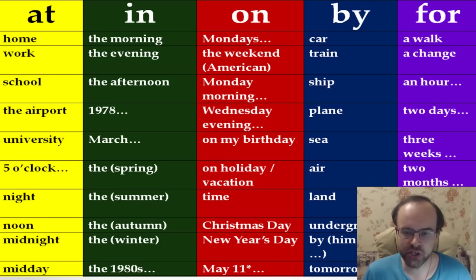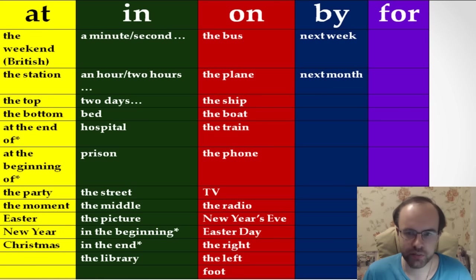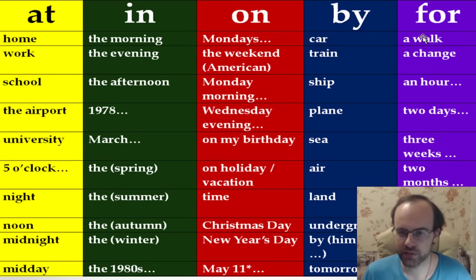We also use 'by' with passive voice — for example: the book was written by him, meaning he wrote the book. We use 'by' for deadlines: by tomorrow means not later than tomorrow. For example: by next week, by next month, by next year. I need to reach an advanced level in English by next month, by next year.